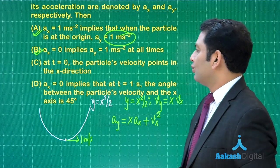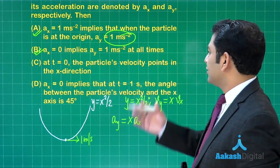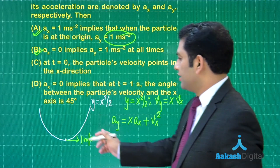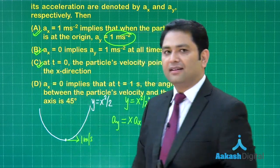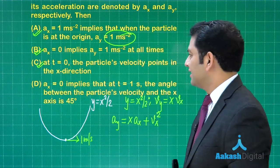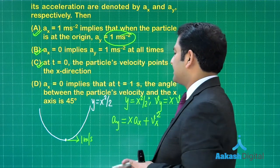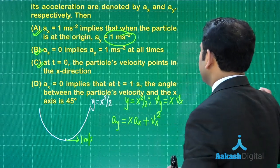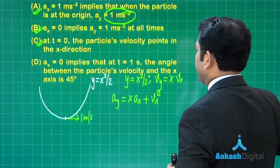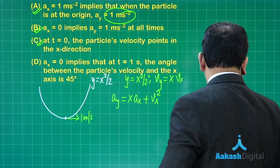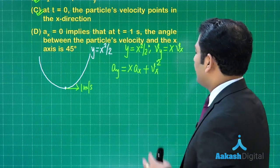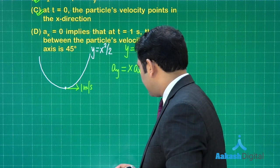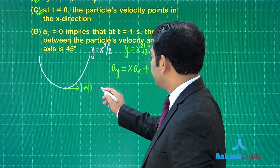Option C: at t equals zero, the particle's velocity points in x direction—perfectly fine, that's the tangent to the trajectory. Option D: ax equals zero implies that at t equals 1 second, the angle between the particle's velocity and x axis is 45 degrees. That is also correct.